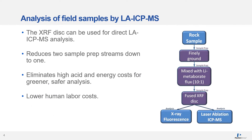An alternate approach to traditional sample analysis is the introduction of laser ablation ICP-MS. The laser ablation ICP-MS analysis protocol entirely removes the acid digestion process, thereby saving all reagent, energetic, regulatory, and labor costs involved. The X-ray disc that is being produced anyway is used in the laser for direct analysis, resulting in overall lower costs and positively enhancing the bottom line.